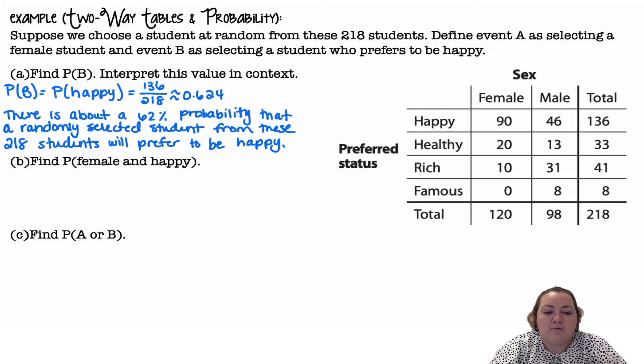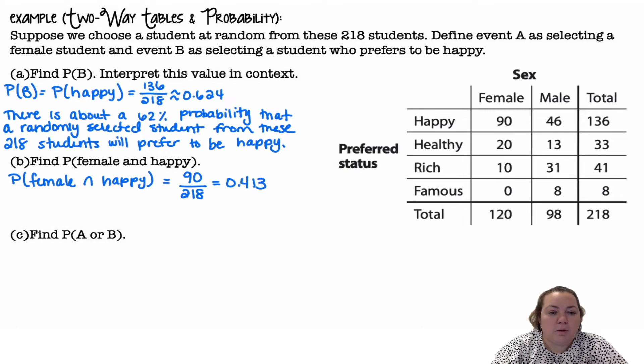Find the probability of female and happy. So I have 90 females that chose happy. So female and happy, I'm using that intersecting symbol, is 90 out of the total 218, which is 0.413 or 41.3%.